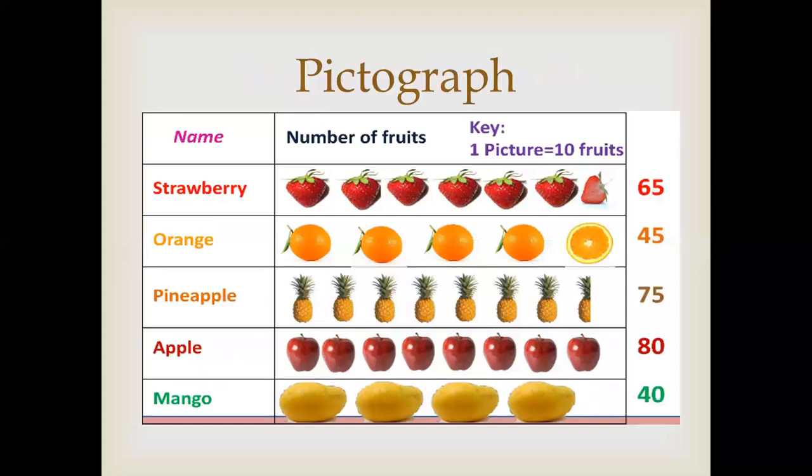Another form is pictorial form, which we call as pictogram. In this, we will draw a table of different fruit items. Here we have taken 5 fruit items. For the strawberry, the value is 65. Now we will draw pictures here to represent strawberry. Now it's not possible to draw 65 strawberries. So for the easy task, we have taken 1 picture equal to 10 fruits. So we have drawn here 6 full strawberries and 1 half strawberry.